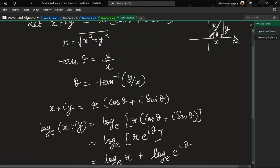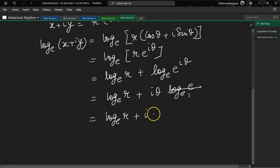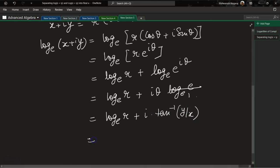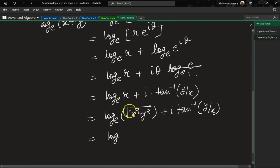θ is tan⁻¹(y/x), so i times tan⁻¹(y/x). I have done one substitution, but for r also we can do the substitution, so log_e of √(x² + y²) + i tan⁻¹(y/x).